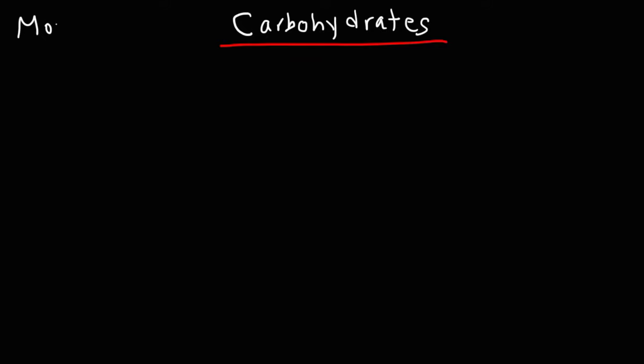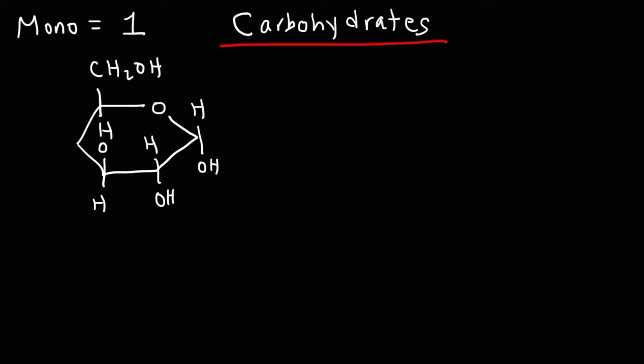The word mono means one, so we're going to go over the simple sugar units. The first one is glucose. Glucose is a monosaccharide with six carbons. This is the cyclic form of glucose. It does have a linear form as well.